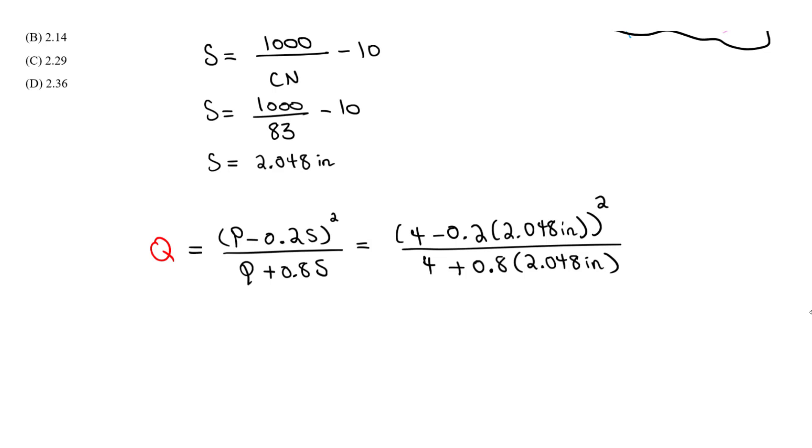So now we can do the math for all of this and solve for Q. And I got around 2.29 inches. So this is going to be our answer for the runoff, just for the residential lots.